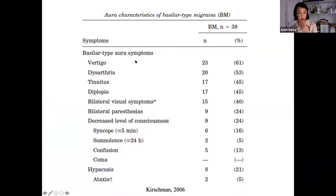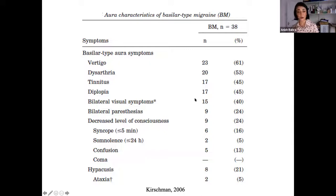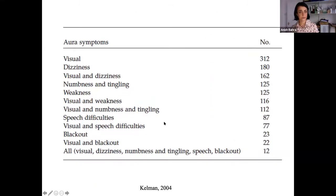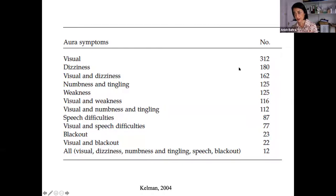A study of basilar — now called brainstem — migraine shows that vertigo is the most common symptom: either you're spinning around the room or the room is spinning around you. Then slurred speech, ringing in the ears, double vision, typical visual aura, and less commonly sensory aura. Some people lose consciousness. It's very unusual to get unsteadiness of walking. I always ask: is it unsteady in the head or unsteady in the feet? When looking at all normal types of aura, you need two brainstem symptoms for that diagnosis. At least half of people with typical aura also have dizziness — that's why vestibular migraine is so important.